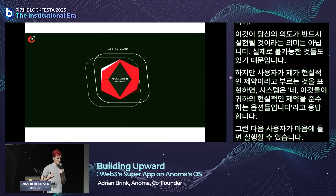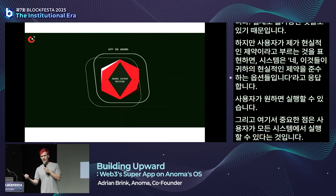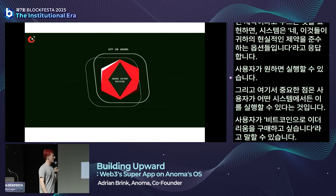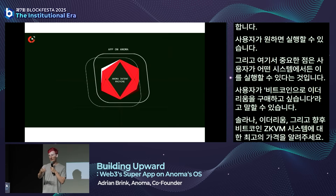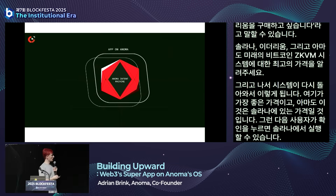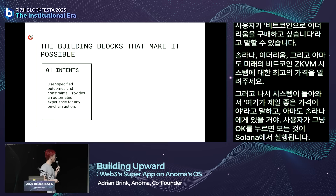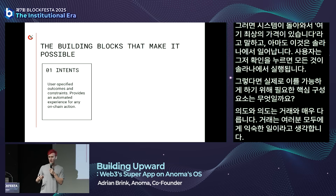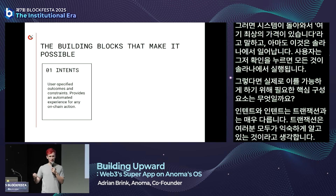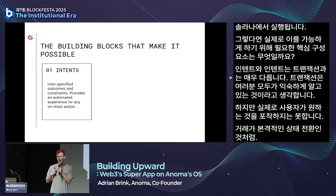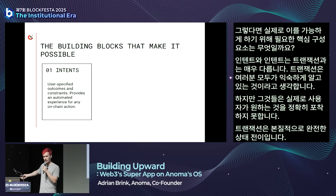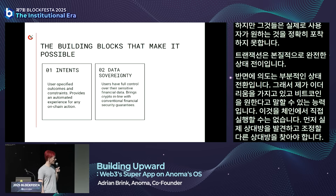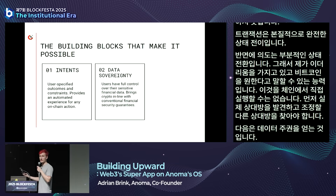The user can get those options executed on any system. For example, the user may say 'I'd like to buy some ETH for Bitcoin—give me the best price on Solana, Ethereum, and maybe some future Bitcoin ZKVM system.' The system comes back with the best price, maybe on Solana, and the user hits okay and it's executed there. Intents and transactions are very different: a transaction is a fully fledged state transition, whereas an intent is a partial state transition—the ability to say 'I have some ETH and I want some Bitcoin'—which requires counterparty discovery before it can be executed on-chain.